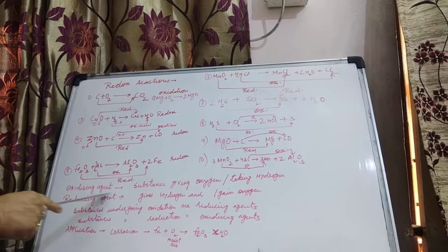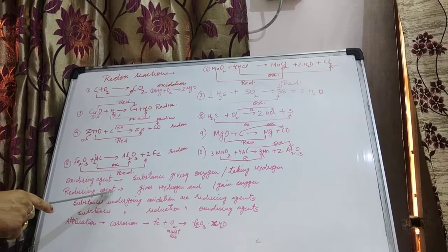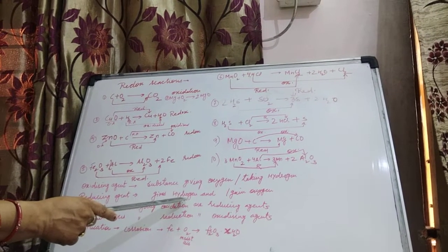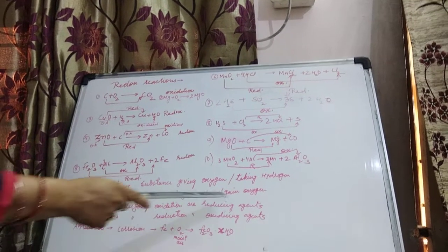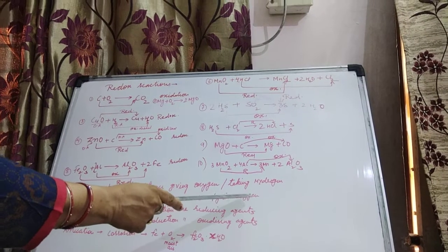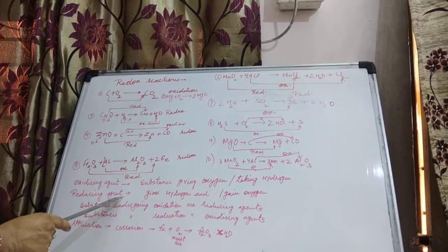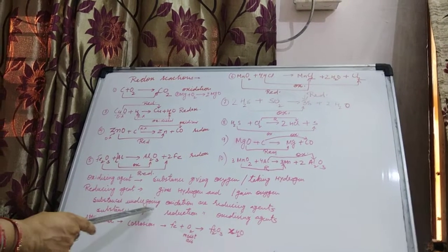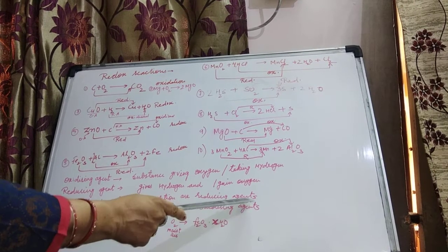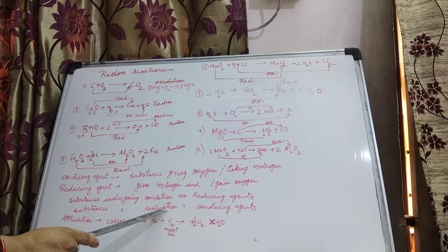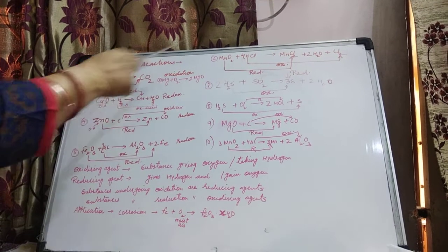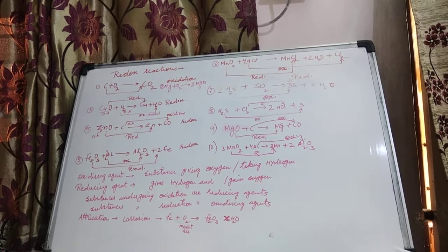The substance responsible for Oxidation is called the Oxidizing agent. Similarly, the Reducing agent is the substance that provides Hydrogen — since addition of Hydrogen is Reduction. Or whichever substance takes away Oxygen is also a Reducing agent. Simply put: the substance undergoing Oxidation acts as a Reducing agent, and the substance undergoing Reduction acts as an Oxidizing agent.